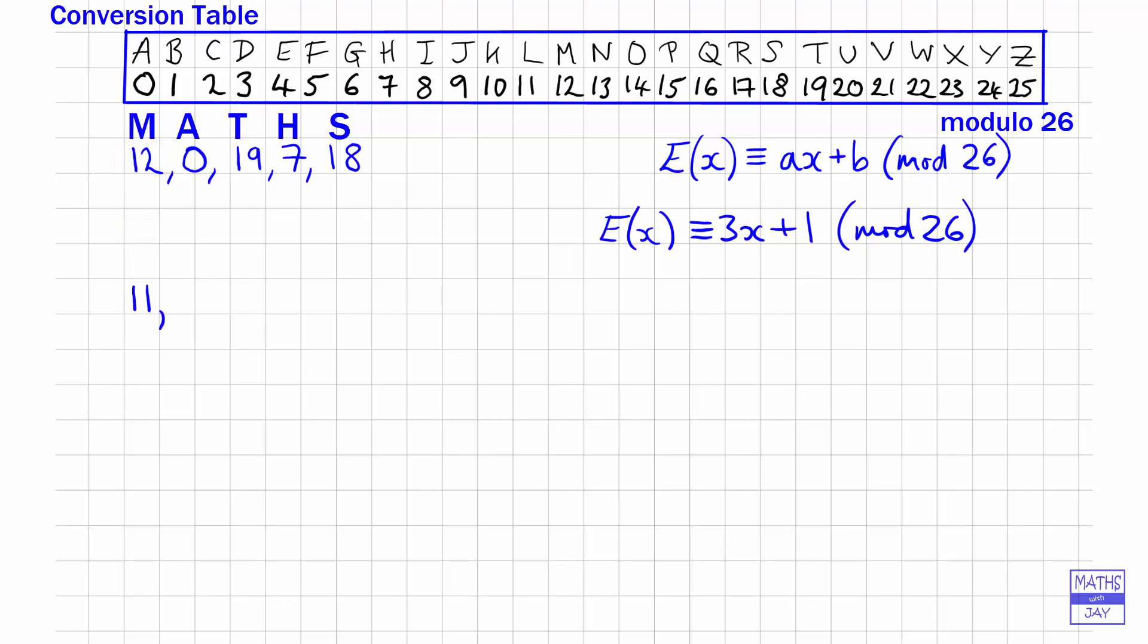The next letter is easy because it was 0, so 3 times 0 plus 1 is 1. Then we've got 19, so 3 times 19 plus 1 is 57 plus 1, which is 58. We subtract 2 lots of 26, so subtracting 52 from 58 gives us 6.